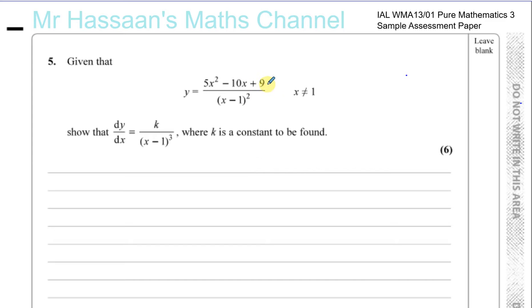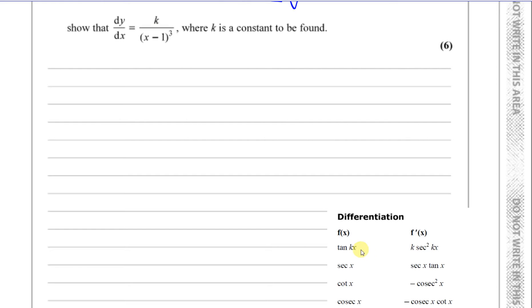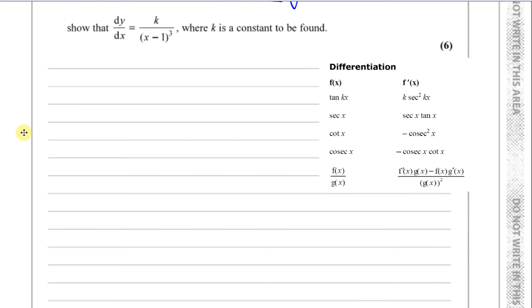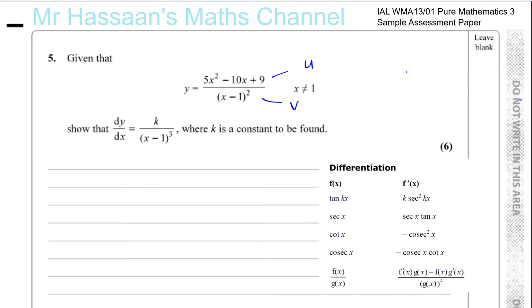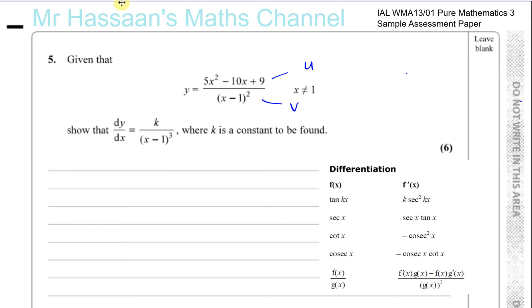So what we're going to do is use what's called the quotient rule, where you call the numerator u and you call the denominator v. Now the quotient rule is actually quoted in the formula book.